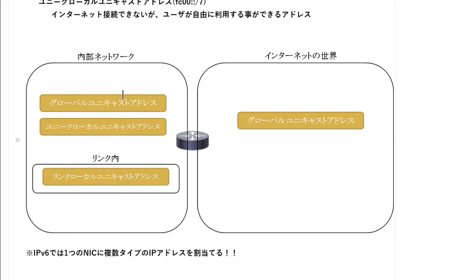今話した内容をまとめた図を見ると、インターネットの世界で使われるのはグローバルユニキャストアドレスで、内部ネットワークでもこのアドレスを使うことができます。IPv4の世界ではプライベートIPアドレスとグローバルIPアドレスを分けてNATやNAPTで変換していましたが、IPv6ではIPアドレスが十分にあるので内部でもグローバルユニキャストアドレスが使えます。アドレス変換の手間がなくなるので通信速度の向上も期待されます。また内部ネットワークで自由に使えるユニークローカルユニキャストアドレスと、リンク内で使うリンクローカルユニキャストアドレスがあります。